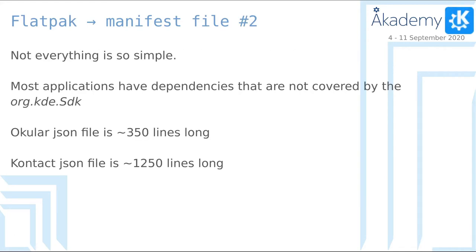This is very easy for Calcium because it doesn't really have any dependency outside the KDE frameworks, but most of our applications actually do have dependencies. Something that has quite some dependencies, like Okular, ends up with a file that is 350 lines long. Something like Contact, which doesn't really have that many outside dependencies but has to build all of KDEPIM — which is very separated into different libraries — Contact uses them all, so it ends up being 1,200 lines, which is a lot.